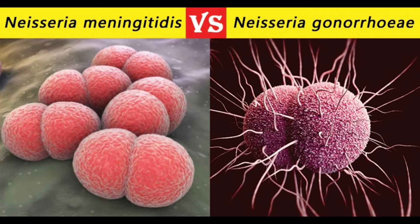16. Nitrite reduction: N. gonorrhoeae doesn't reduce nitrites; N. meningitidis can reduce nitrites in low concentrations. 17. Autolysis: N. gonorrhoeae may autolyse; N. meningitidis also autolyses. 18. Glutamyl aminotransferase: N. gonorrhoeae is a non-producer; N. meningitidis is a producer. 19. Beta-lactamase production: common in N. gonorrhoeae; rare in N. meningitidis. 20. Antigen heterogeneity: more in N. gonorrhoeae than meningococci; comparatively less in N. meningitidis. 21. Grouping: N. gonorrhoeae strains are characterized by auxotyping which recognizes requirements for specific nutrients; N. meningitidis serogroup is determined by its lipopolysaccharide capsular antigen. 22. Normal flora: N. gonorrhoeae is not considered normal flora; many normal individuals may harbor N. meningitidis in the upper respiratory tract.